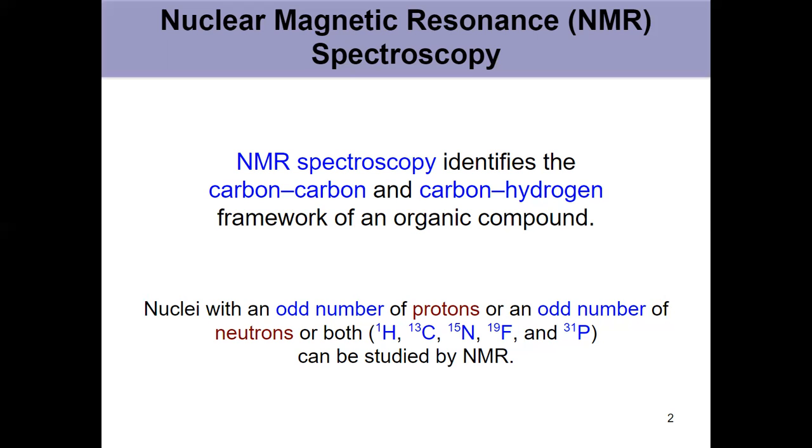Any nuclei that have an odd number of protons, an odd number of neutrons, or both, can be NMR active and therefore studied by NMR. So basically, the only thing that can't be is if you have an even number of protons and an even number of neutrons. Those are NMR inactive.